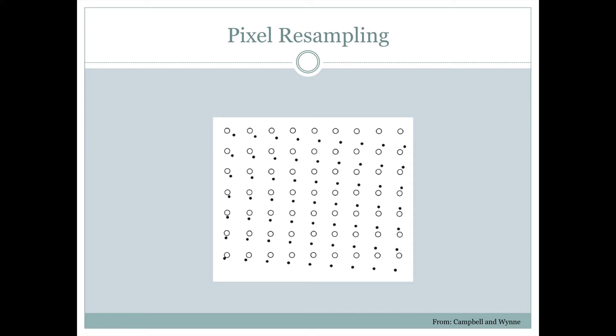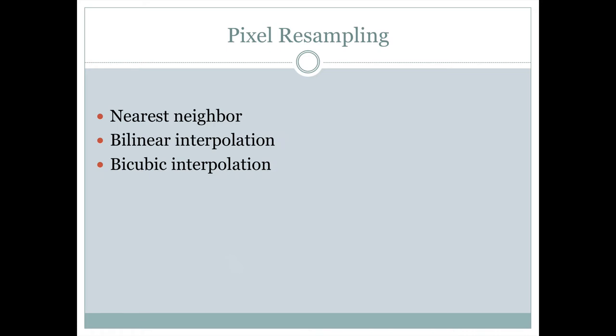But as far as what value those pixels get, we can do that in a number of different ways. One way is by nearest neighbor, where we just take the old pixel closest to the new pixel and give it that value. And then we can also do it by either bilinear interpolation or bicubic or sometimes just called cubic interpolation. I'll show examples of all three of these.